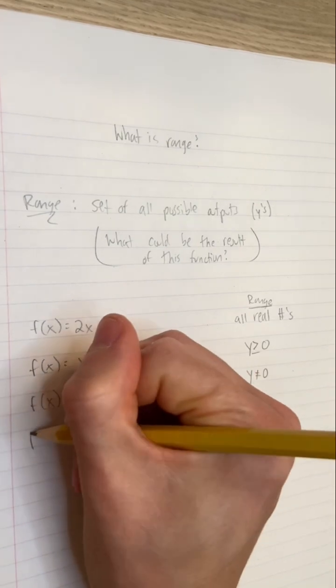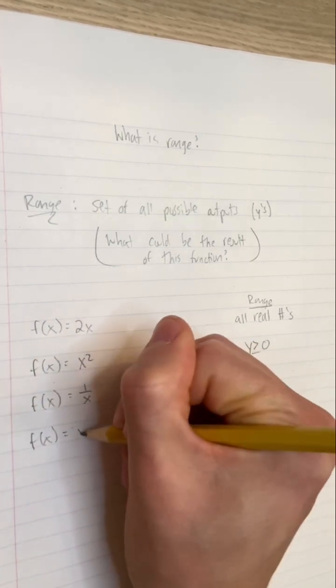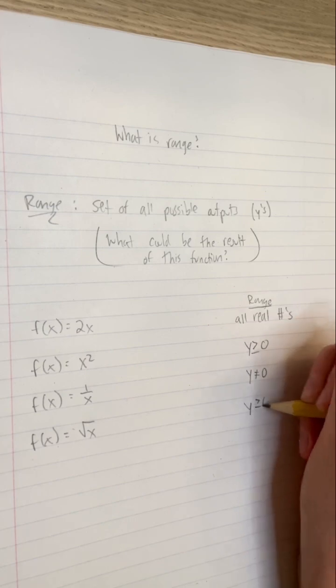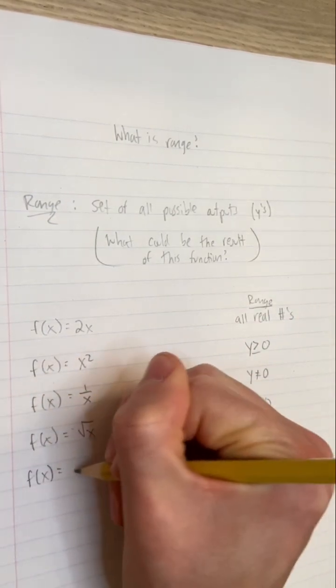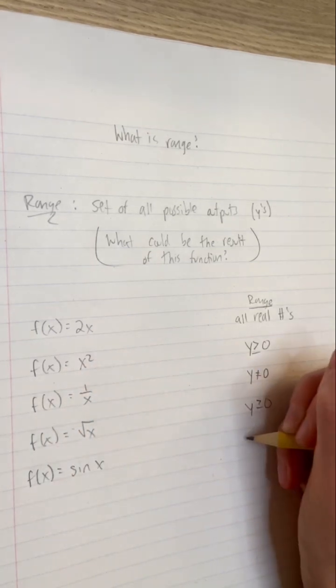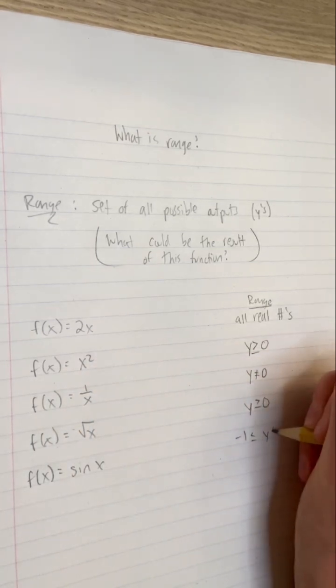If f equals the square root of x, the range of f is all numbers greater than or equal to 0. The only real outputs of square root are 0 or positive. If f equals sine x, the range of f is all numbers from negative 1 to 1. Do you know why?